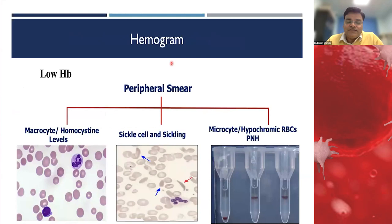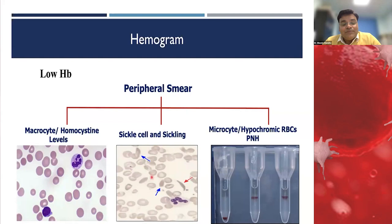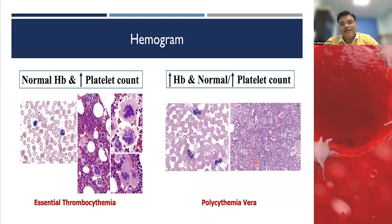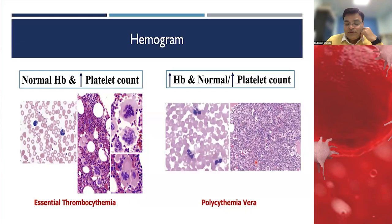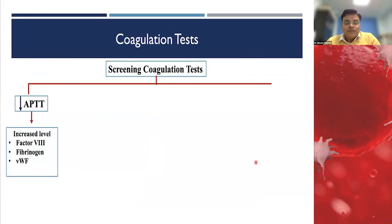Simple initial investigations can suggest the cause of thrombosis. A hemogram showing microcytosis may indicate elevated homocysteine due to folate or B12 deficiency. Sickle cells on peripheral smear suggest sickle cell disease as the cause. In PNH, microcytic hypochromic anemia warrants PNH testing by flow cytometry. If hemoglobin is normal but platelet count is markedly elevated with characteristic bone marrow features, consider essential thrombocythemia; if hemoglobin is above WHO cutoff values, consider polycythemia vera.